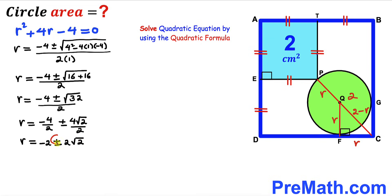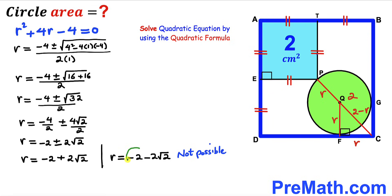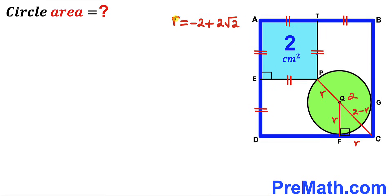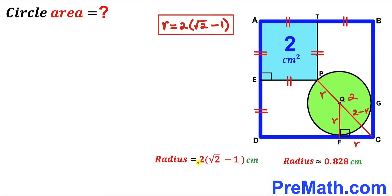Splitting the two signs, our lowercase r is either −2 + 2√2 or −2 − 2√2. We can see this second r value is negative, which is not feasible, so we reject it. We accept r = −2 + 2√2. Since 2 is a common factor, we can write r = 2(√2 − 1). This is our radius of the circle.